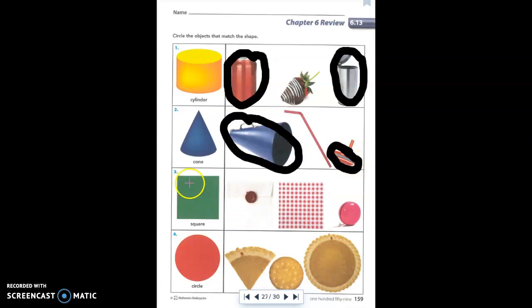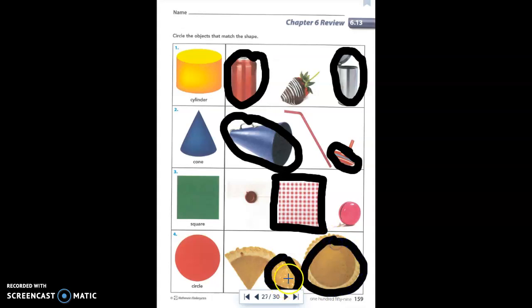Now I'm going to some flat shapes. I have a square here. Which of these objects is a square? Well, the napkin is the only thing that is a square. That's the one I'm going to draw my circle around. Now next I need to find circles. Is this piece of pie a circle? No. Is the cracker a circle? Yes. And is the pie itself a circle? Yes. These objects are both circles. Easy peasy. Nothing to it.